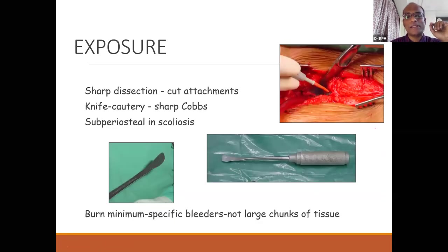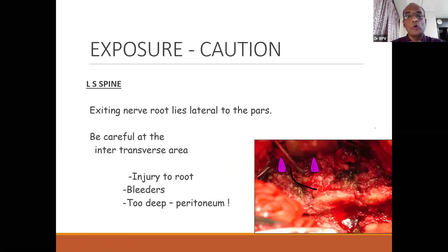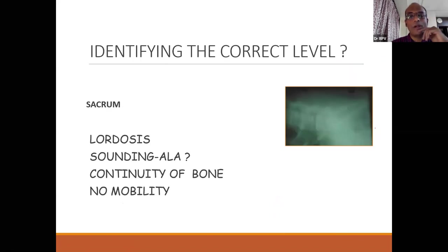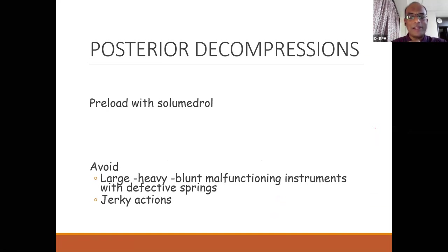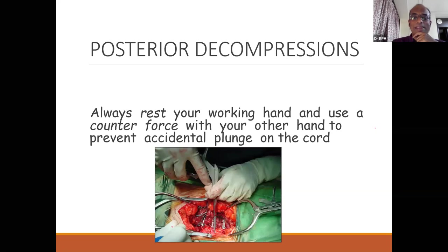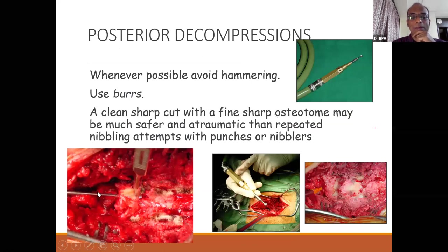A key error: ensure the C-arm is properly positioned to allow AP views — if the table blocks the C-arm, you cannot confirm level. Always confirm levels intraoperatively. Dissect from caudal to cephalad to minimize muscle denervation and devascularization. Good instruments are more important than implants — invest in a good forward punch, sharp cutting curettes, and nibbler. Be careful not to go inadvertently into the intertransverse area when dissecting for fusion. Look for specific bleeders — bony edges bleed, use bone wax.